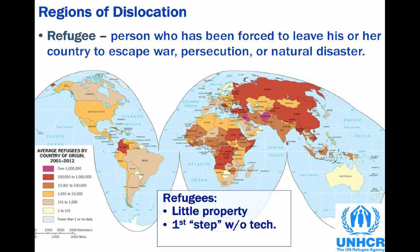Keep in mind, if they could afford to travel by car or by plane they would — it's just that most can't afford to do it. Also, refugees move without the official documents that accompany channeled migration.